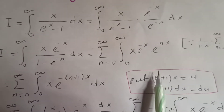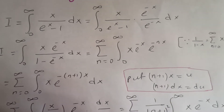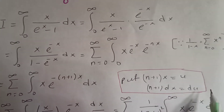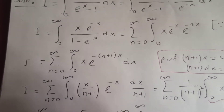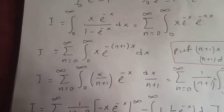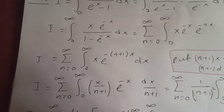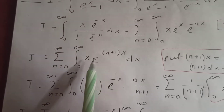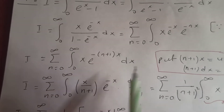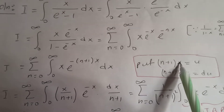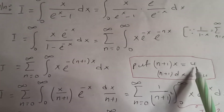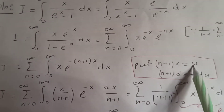If we differentiate, (n+1) dx equals du. So I is the sum from n equal to zero to infinity of the integral from 0 to infinity. We solve for x: x equals u over (n+1).